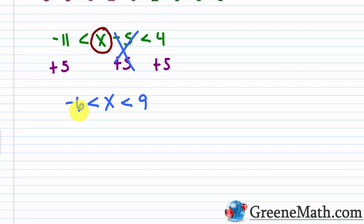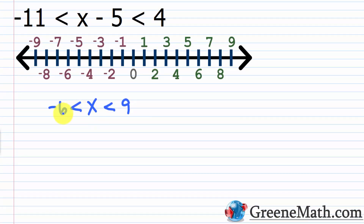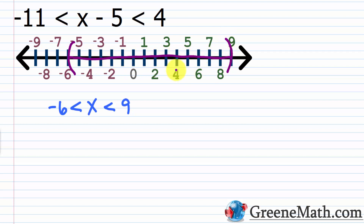Let's look at this on the number line to fully understand this concept. If I want a number between negative 6 and 9, and it's not inclusive because these are strict inequalities, I find negative 6 on the number line and put a parenthesis facing to the right. Then I find 9 and put a parenthesis facing to the left. Then I shade everything in between. That shaded area represents all possible solutions for x.